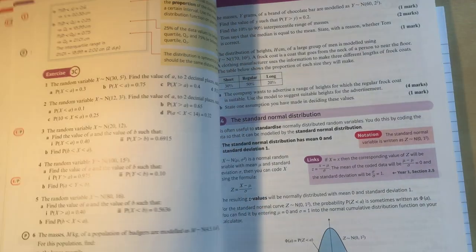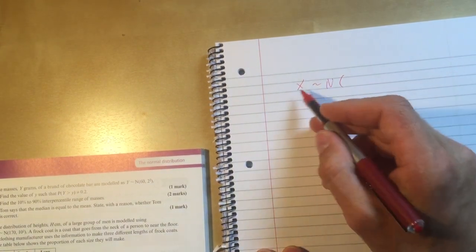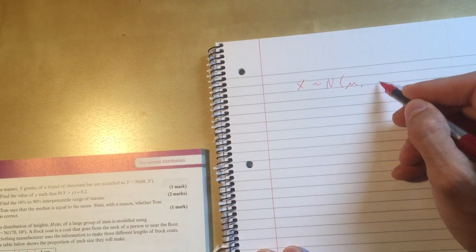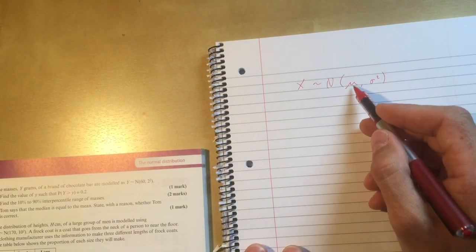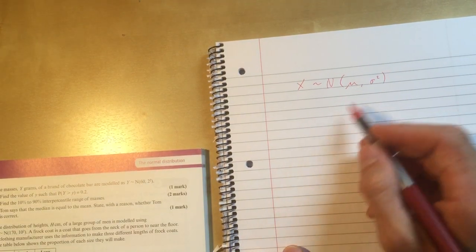Looking at section 3.4 and the standard normal distribution. So far this chapter, here's the story. X is distributed normally with mu and sigma squared. Mu being the mean, sigma being the standard deviation.